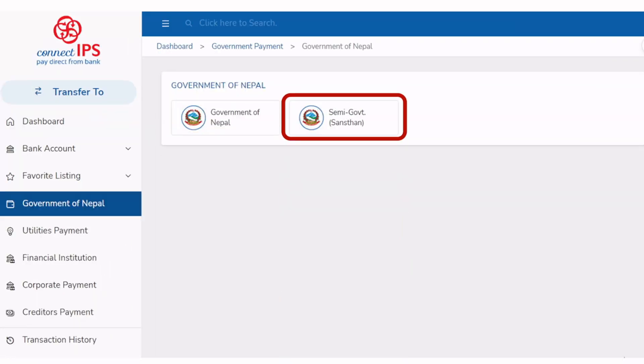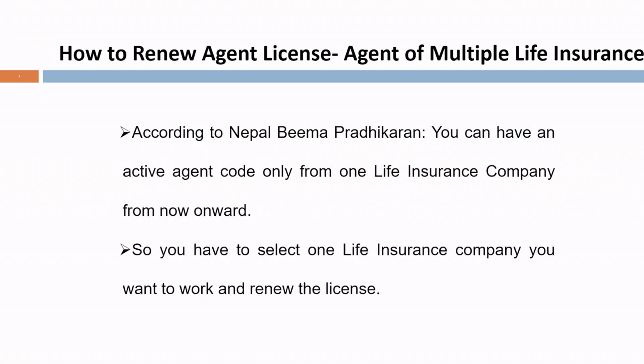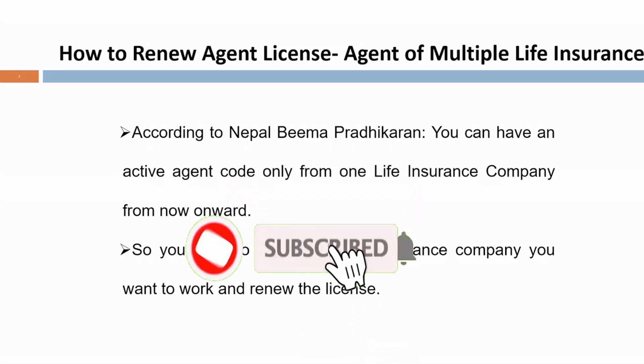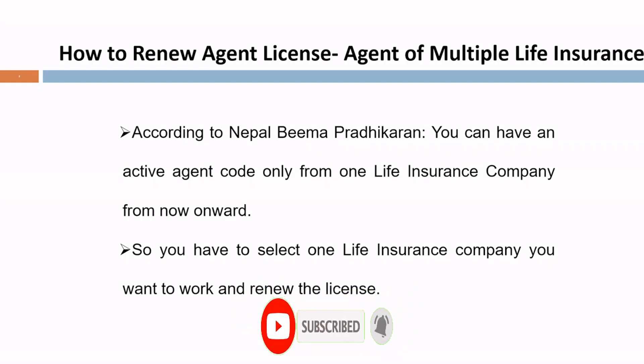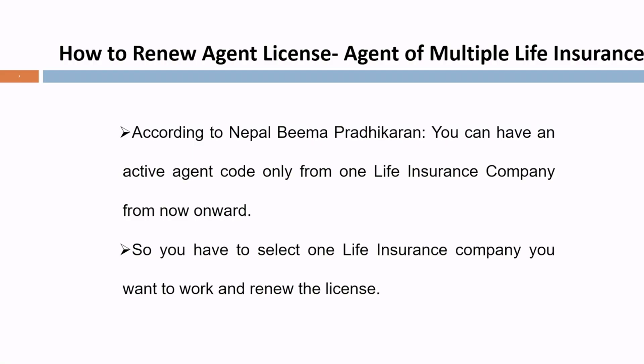Welcome to my channel. This is the second part of the video on how to renew your agent license. In this video I am going to talk about how you can renew your agent license when you are an agent of multiple life insurance companies. According to Nepal Beema Pradhikaran, you can have an active agent code only from one life insurance company from now onward, so you need to select only one life insurance company you want to work with and renew the license accordingly.